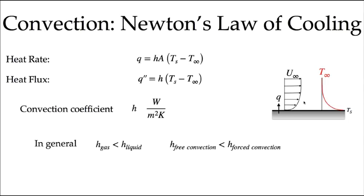We'll discuss that in more detail in a later module, but for now we describe convection mathematically using Newton's law of cooling. Newton's law of cooling states that the heat rate q equals the convection coefficient h times the area of the surface times the temperature difference between the surface and the free-stream temperature T-infinity. We can also express it as a heat flux by dividing by area. The convection coefficient has units of watts per meter squared kelvin — required so that, combined with the area in m² and the temperature difference in kelvin or celsius, the heat rate has units of watts.